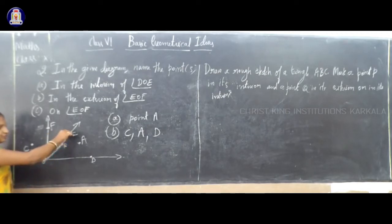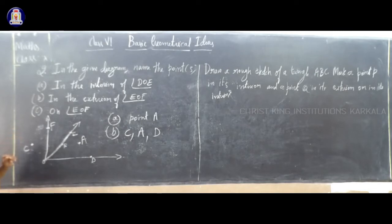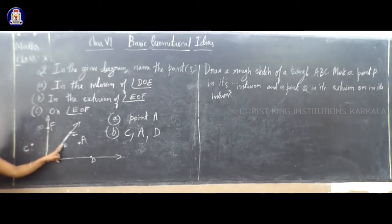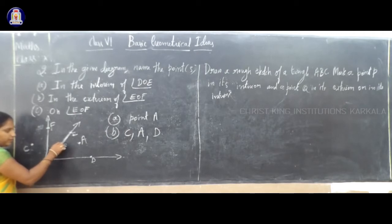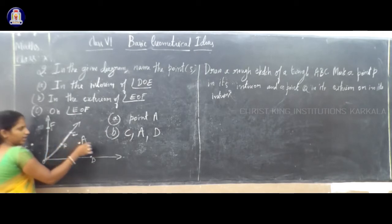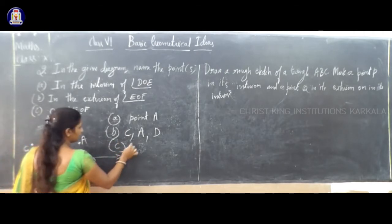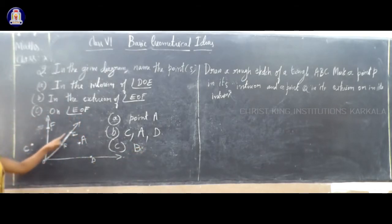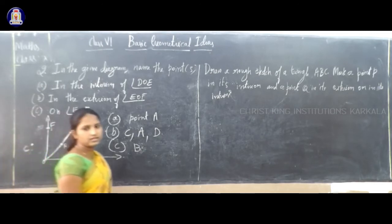First we are going to see the figure and the angle. So now the other one — on angle EOF, the points on EOF: that is B. So this point B is on the angle EOF. Point B is on the angle EOF. Clear. So this is the answer.